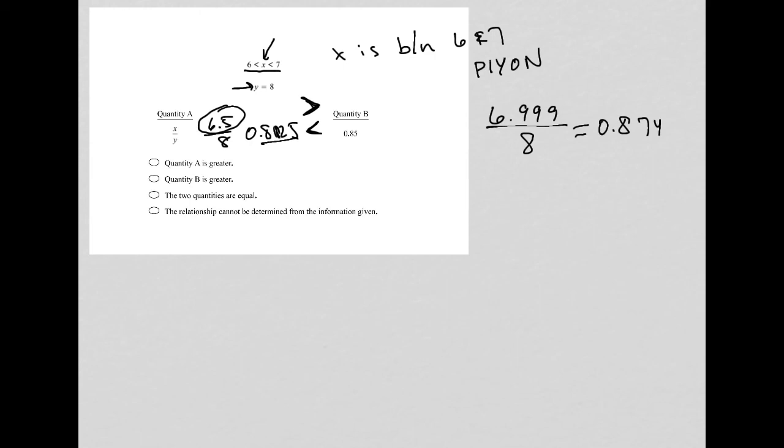So with this situation, I think the answer must be the relationship cannot be determined. Because when x is halfway between, it's smaller. But when x is really close to 7, it's larger. So because we don't know what x is, it could be either or. And therefore, the relationship cannot be determined from the given information.